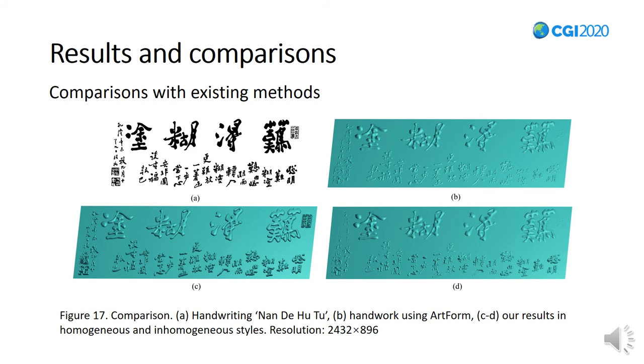We also compare our result with the one created using the software Artform for input image with a resolution of 2432 x 896. It took about 10 minutes to generate the relief, in which most time was spent on stroke region extraction, particularly on selecting the border pixels, as shown in Figure 17b.